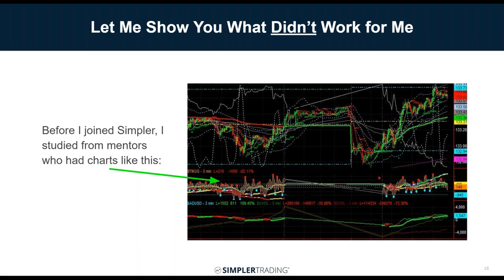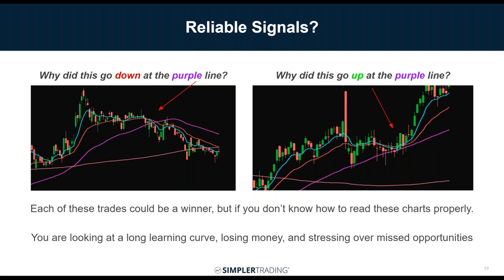One of my mentor's screens looked like a complete mess — I couldn't even see price in there. The engineer in me had to figure this out. I was looking at price coming into a moving average — why did it go through and fall on this one, but get scooped up and continue higher on that one? We need to figure out which way it's going to go, because on the left we could put on a short trade and on the right a long trade.